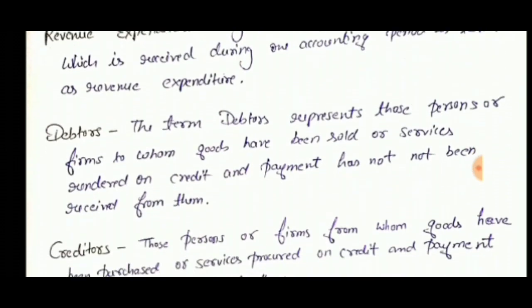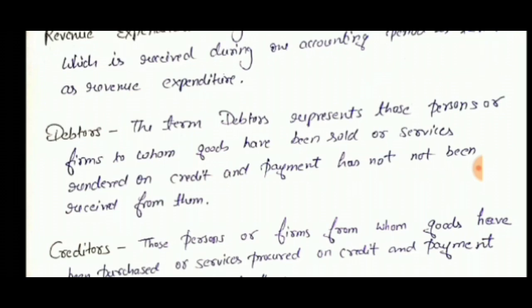Next term is debtors. The term debtors represents those persons or firms to whom goods have been sold or services rendered on credit and payment has not been received from them. For example, if someone purchases goods from your business on credit — meaning they haven't paid you yet — they are your debtors. They will remain your debtors until they make payment to you.